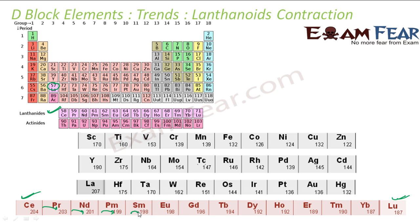The values continue: 203, 201, 199, then a little bit stable, then again 186, 194, 192, 192, 189, 190. This is a decrease — an unexpected, greater than expected decrease in the ionic radius. The impact is that the next elements are all the more smaller. For lanthanum, the atomic size is 207, but the next element has size 175 — a huge difference.